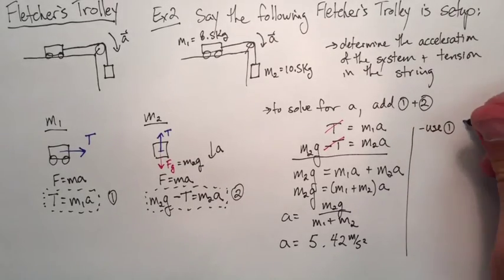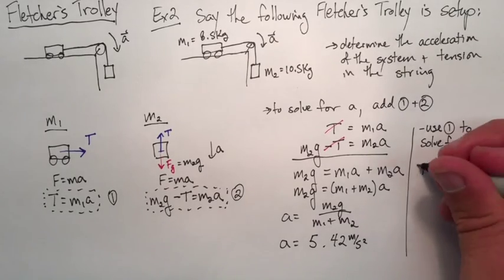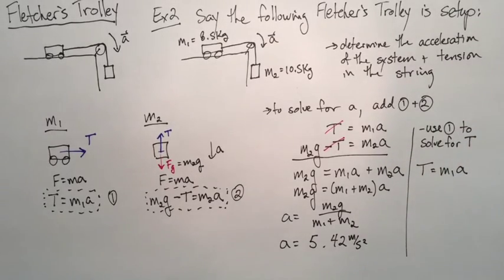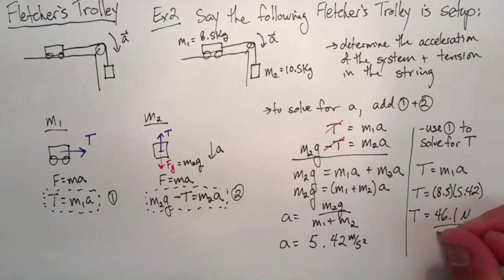Now let's solve for tension. So let's use equation one because it's smaller. So just tension equals M1A. We found the A before, so it's just 8.5 times 5.42, which is equal to 47.1 newtons.